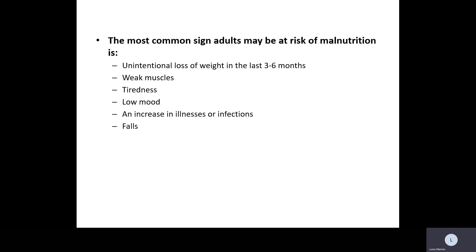The most common signs adults may be at risk of malnutrition are unintentional weight loss in the last three to six months, adults complaining of weak muscles, tiredness, low mood, an increase in illnesses or infections, and an increased risk of falls.